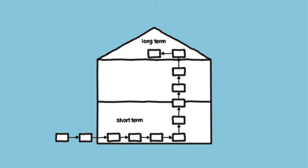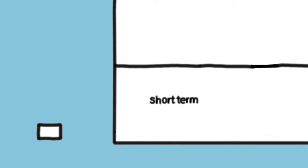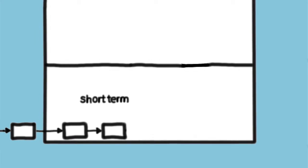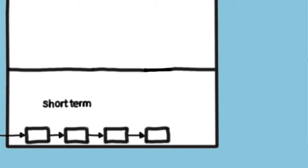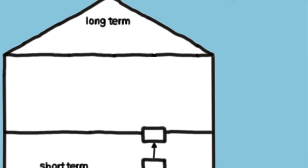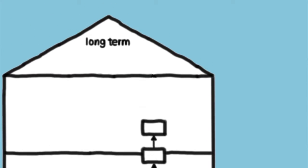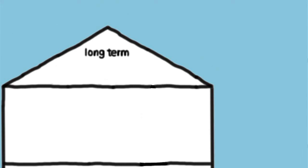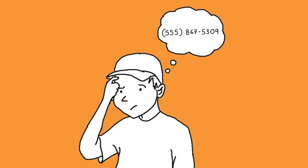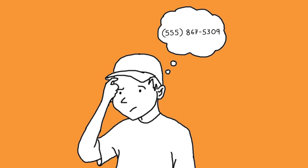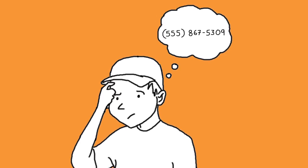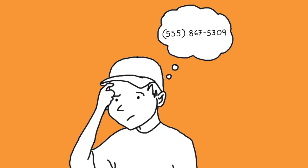Short-term and long-term memory are familiar to most people. Information received from the five senses is stored in short-term memory. It is retained for a short period of time before the information is either placed in long-term memory or forgotten. Your friend tells you her new cell phone number, and you repeat it in your head until you write it down — this is an example of short-term memory.